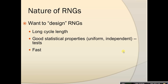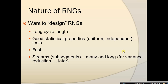We also want the random number generators to be fast, because if our algorithm is slow for generating random numbers, our simulation is going to be even slower. Additionally, we want streams and sub-segments — many of them, and long ones — which is important for the purpose of variance reduction.